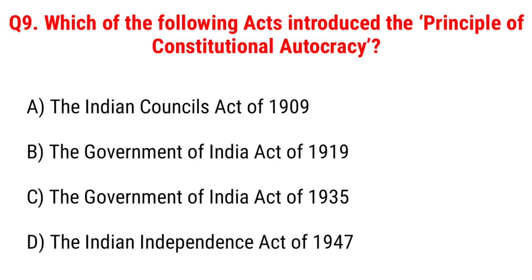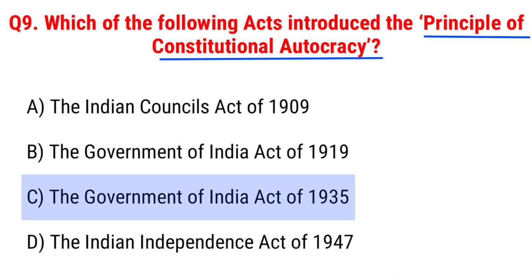Next question: which of the following acts introduced the principle of constitutional autocracy? Option A, the Indian Council Act of 1909; B, the Government of India Act of 1919; C, the Government of India Act of 1935; D, the Indian Independence Act of 1947. The right answer is Option C, the Government of India Act 1935.